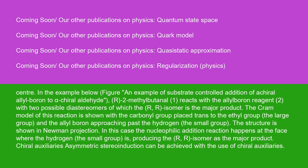In the example below, an example of substrate-controlled addition of a chiral alloboron to an alpha-chiral aldehyde: R-2-methylbutynol-1 reacts with the alloboron reagent, with two possible diastereomers of which the RR isomer is the major product. The Cram model of this reaction is shown with the carbonyl group placed trans to the ethyl group (the large group), and the alloboron approaching past the hydrogen (the small group). The structure is shown in Newman projection. In this case, the nucleophilic addition reaction happens at the face where the hydrogen (the small group) is, producing the RR isomer as the major product.